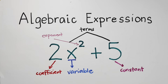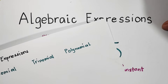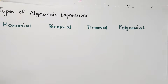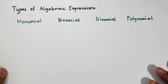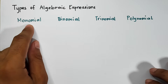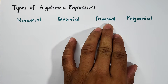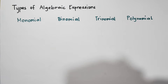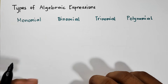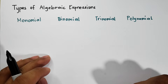In the next part of our video, we will talk about the different types or kinds of algebraic expressions. So here are the different types: we have the monomial, binomial, trinomial, and polynomial. The kind of expression depends on the number of terms.